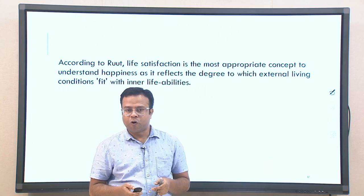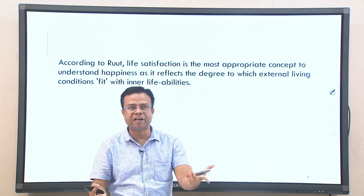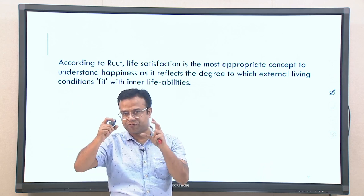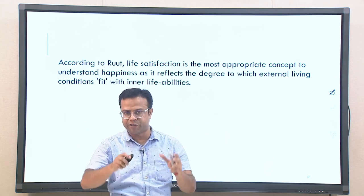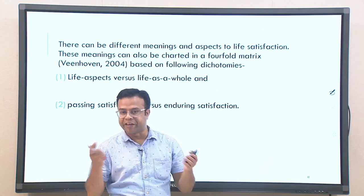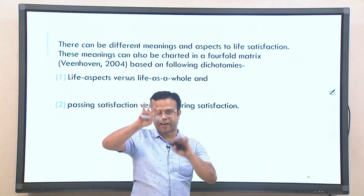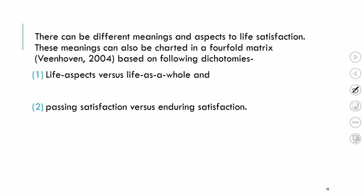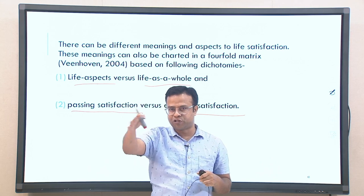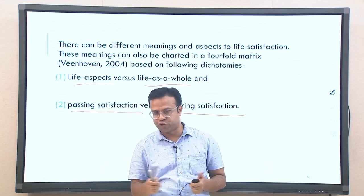Veenhoven further unpacked the idea of life satisfaction by adding more dimensions, organizing them into a fourfold matrix. Life satisfaction can refer to a part of life or to life as a whole, and it can be passing (temporary) or enduring (long-term). The interaction of these two dimensions gives four concepts: pleasure, top experiences, part satisfaction, and life satisfaction.